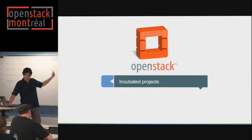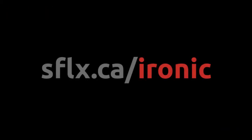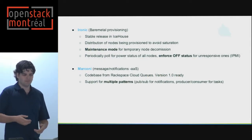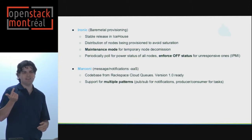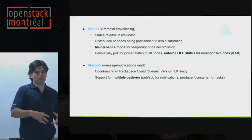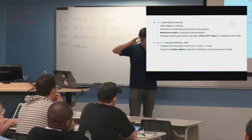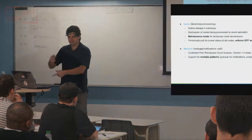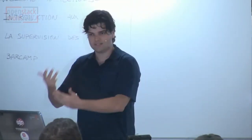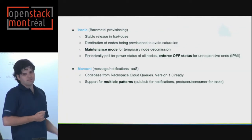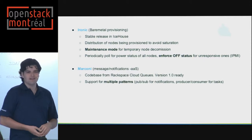That covers the main projects. There are four incubated ones. Ironic handles bare metal management — using protocols like IPMI and TFTP, it allows you to bootstrap a server: you open the box, connect the power supply and network cable, and it installs itself automatically thanks to Ironic. It standardizes something everyone was doing differently.